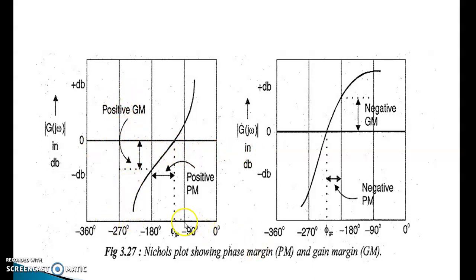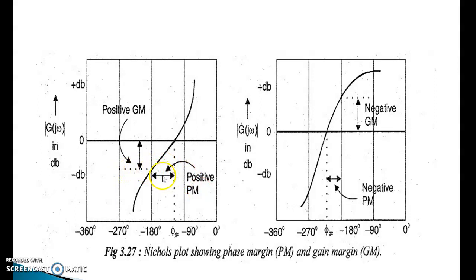The phase angle axis shows values: 0, minus 90, minus 180, minus 270, and minus 360 degrees. This angle range corresponds to the positive gain margin value. This is the range for the positive phase margin value. This region is for positive gain margin, and this region is for positive phase margin values.